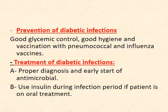To prevent diabetic infections, you must control blood sugar — keeping fasting blood glucose below 140, post-prandial below 180, and hemoglobin A1C around 6. Good hygiene and vaccination with pneumococcal and influenza vaccines are also important.